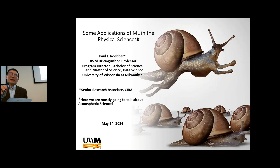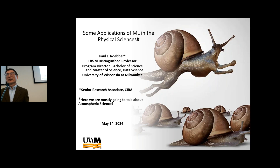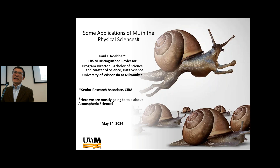We have Professor Paul Ruber of University of Wisconsin-Milwaukee, distinguished professor. He got his bachelor's degree at McGill University, then went to MIT for his master's, and then back to McGill for his PhD. His PhD supervisor was John Jackham, also a distinguished professor from MIT.